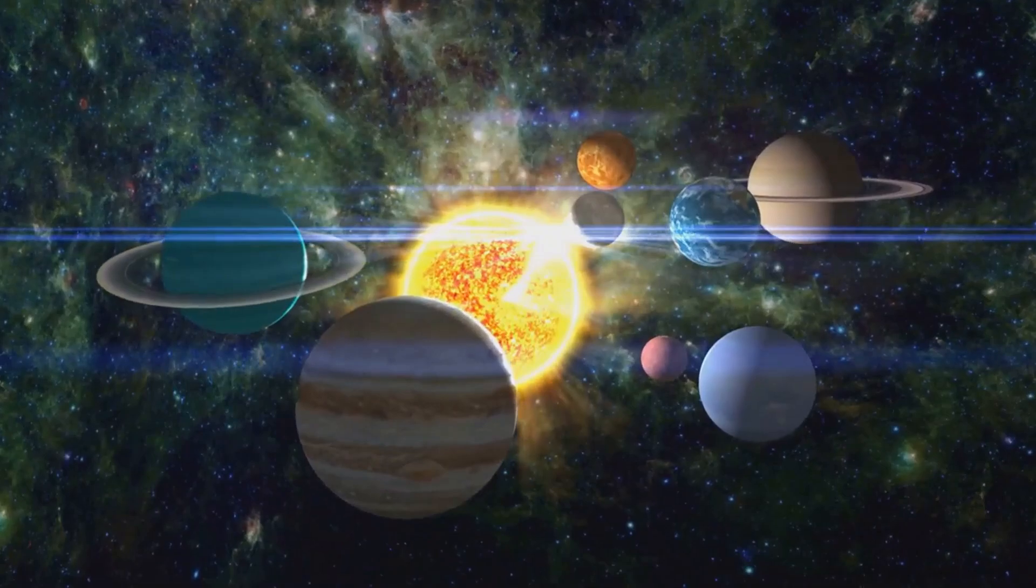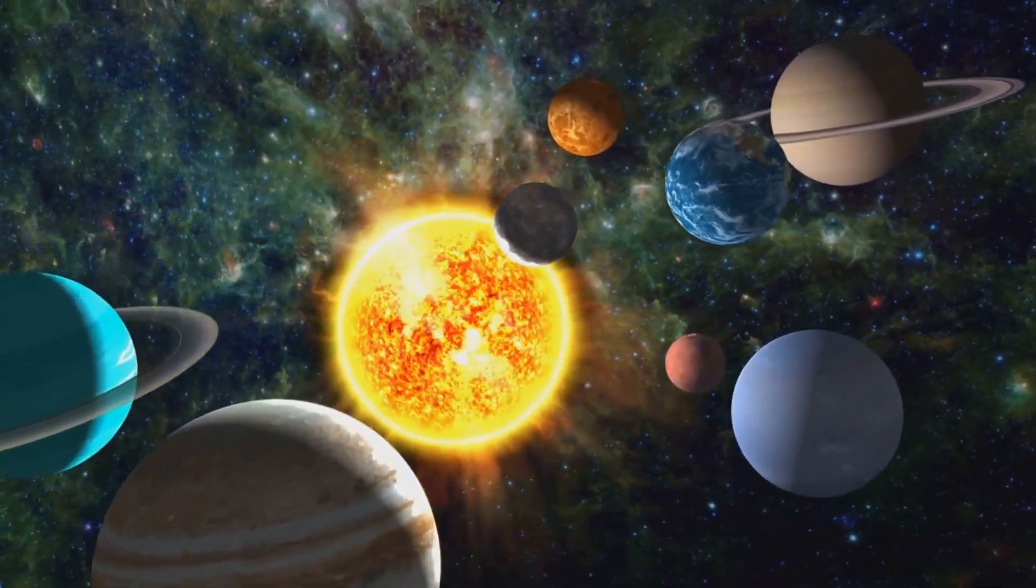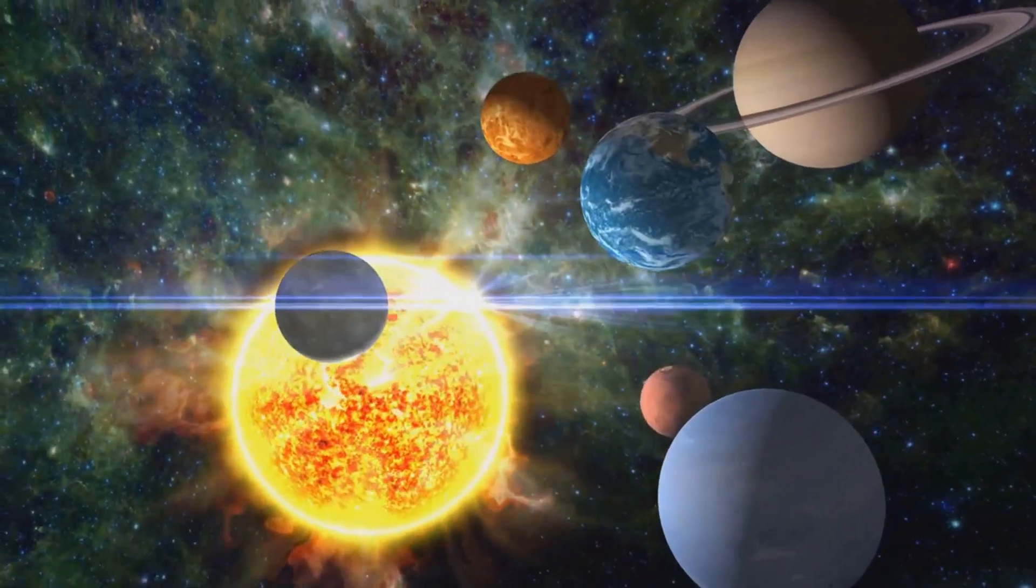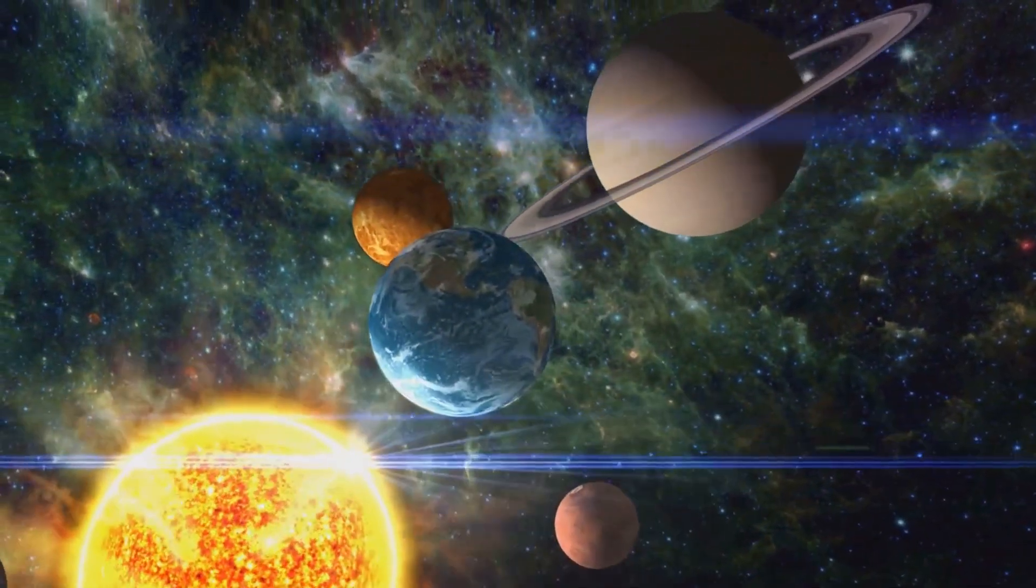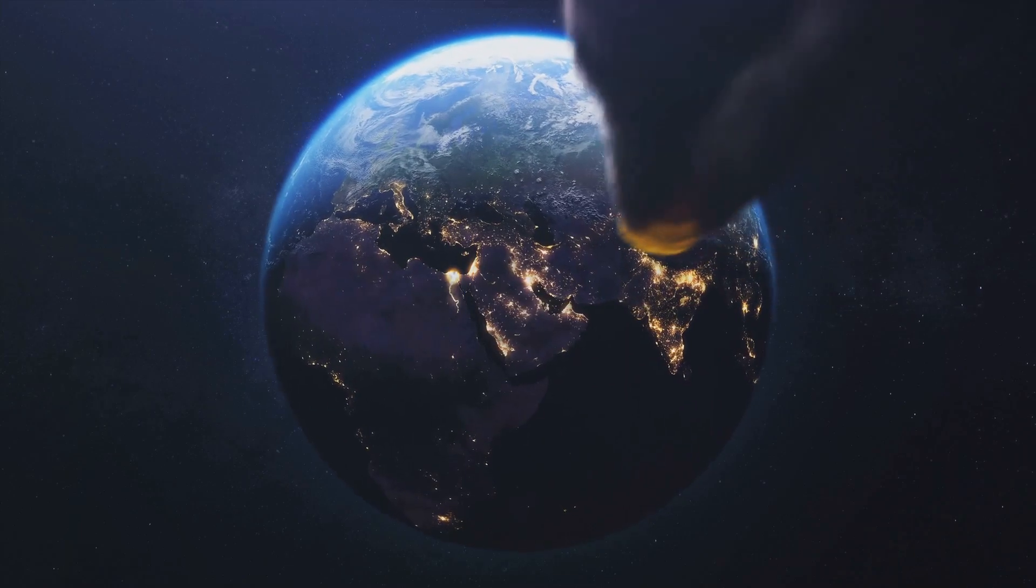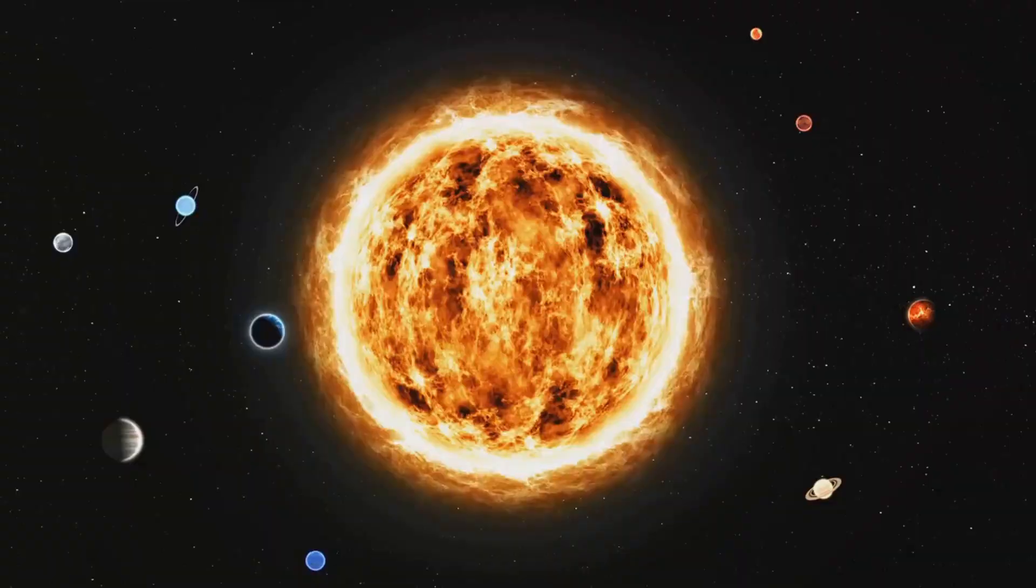Interestingly, the theory of the Nemesis star came about as an explanation for the supposed periodicity of mass extinctions on Earth. Scientists observed that mass extinctions seem to occur in a cyclical pattern, roughly every 26 million years. Could the Nemesis star be the cause of this cycle?